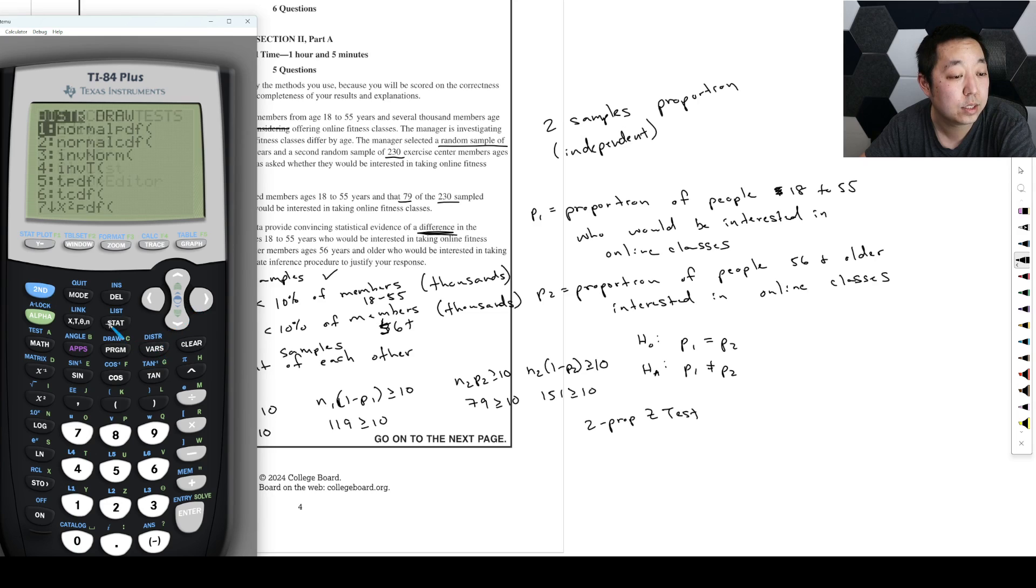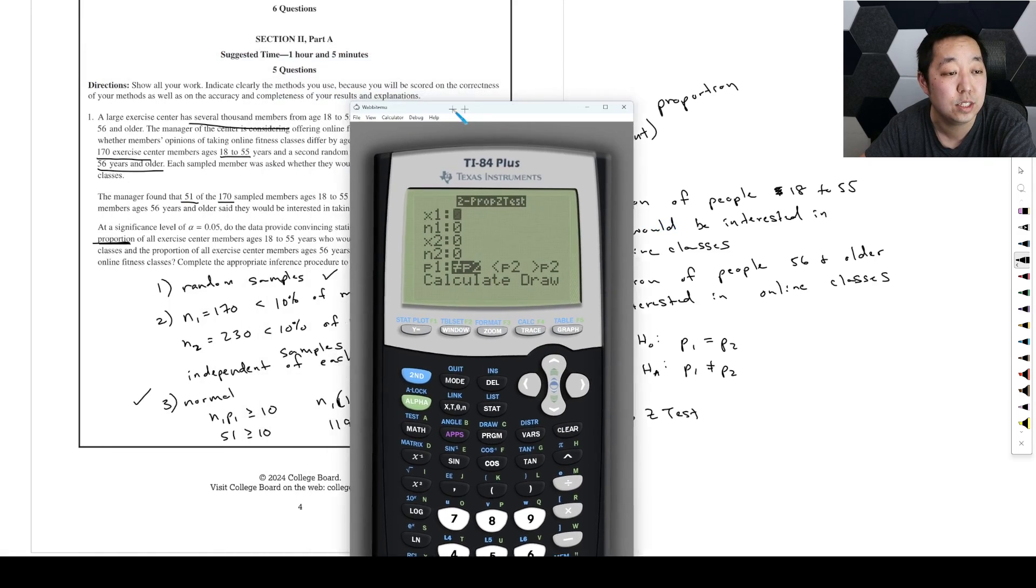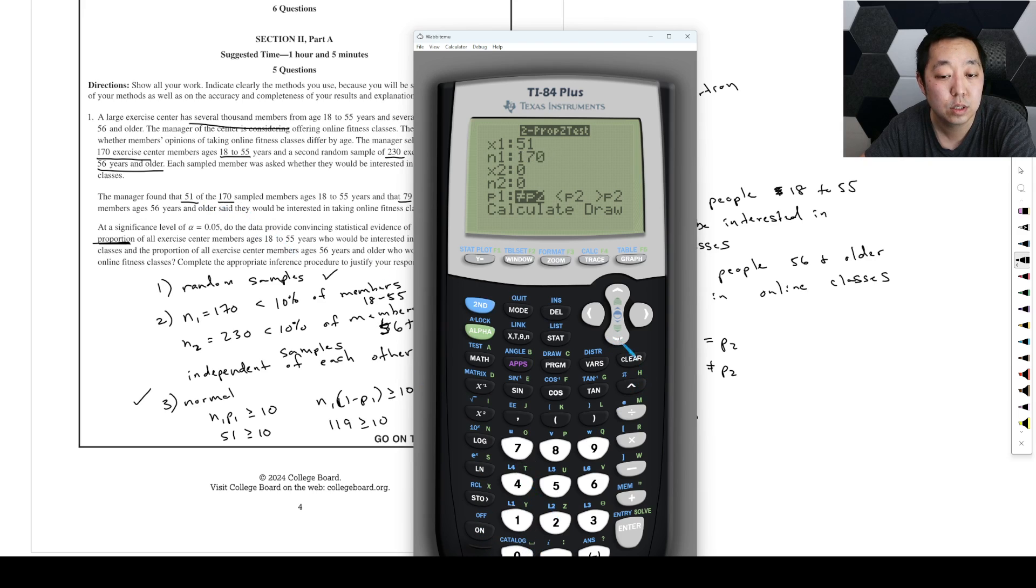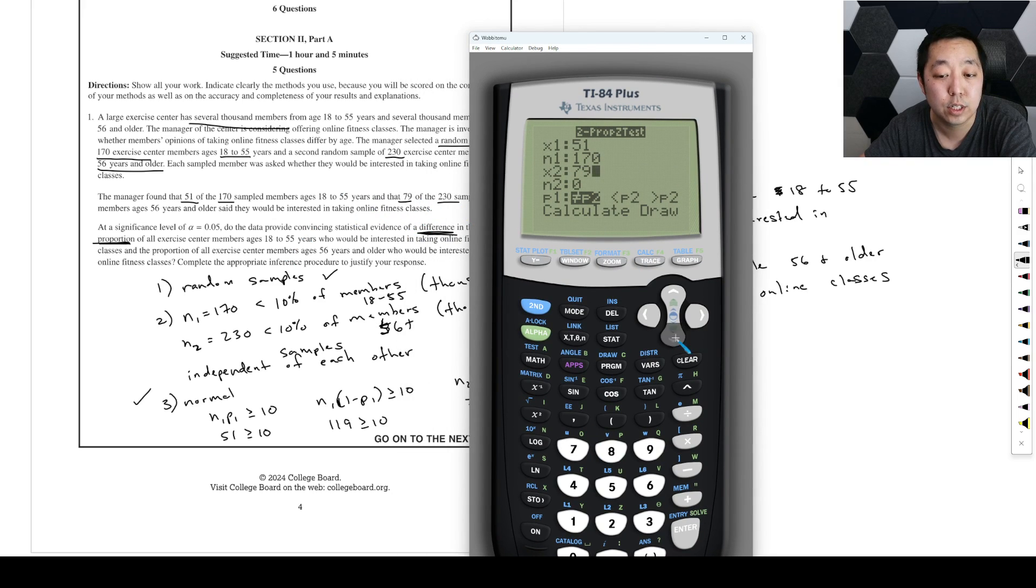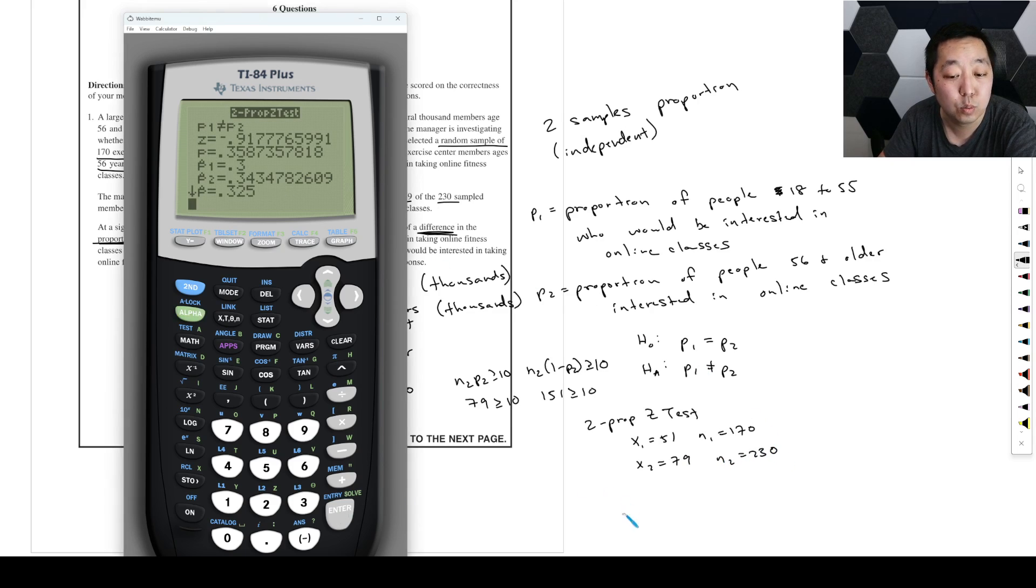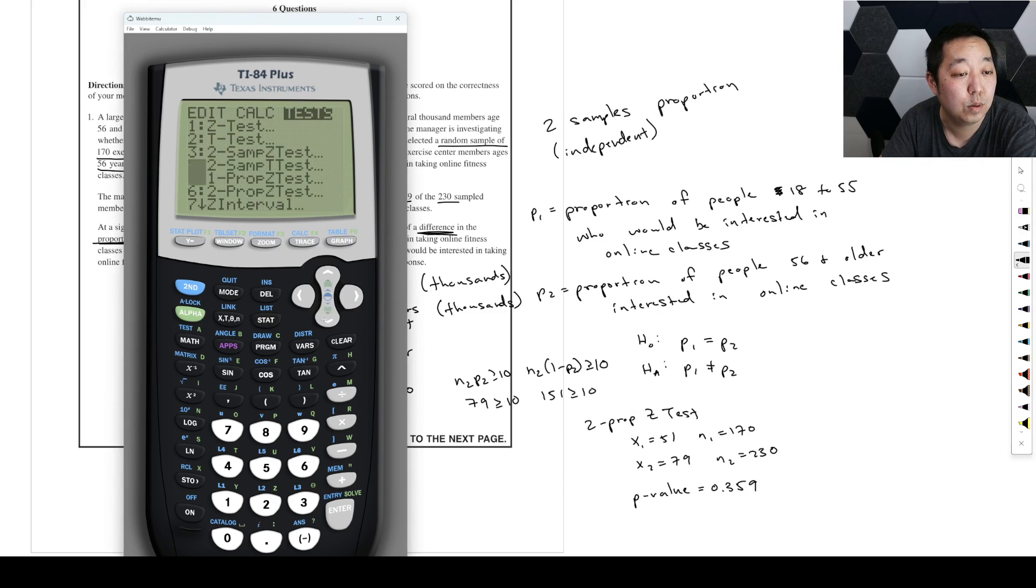So Stat, Tests, Two proportions Z test. X1, this is the number of people who would be interested, is 51, the total out of the 170. Then this one is going to be 79 out of 230 here. And then we want not equal to. Let's freeze the calculator there. We're going to say X1 is equal to 51, where N1 is equal to 170. X2 is equal to 79, and N2 is equal to 230. And then we're doing not equal to. So then we're going to calculate. We get a p-value is equal to 0.359. I'm just going to double check that. So yeah, it looks like I did that right. So the p-value is 0.359.